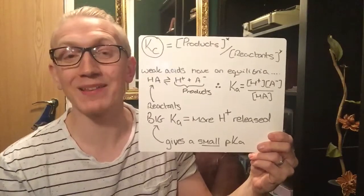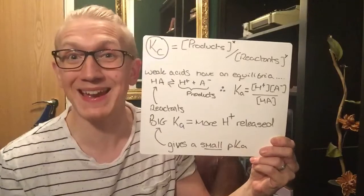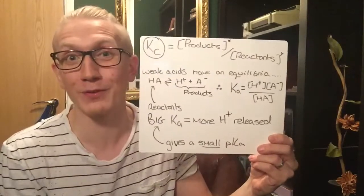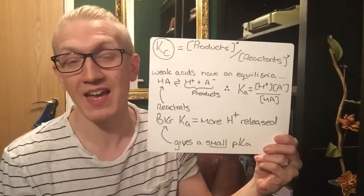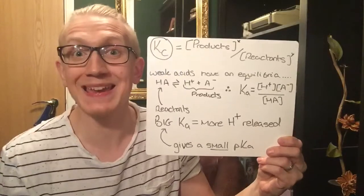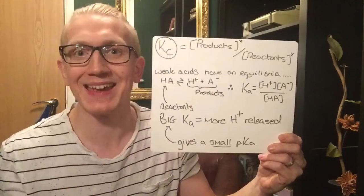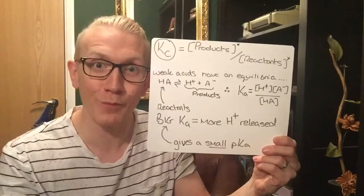What you've also got is a pKa scale associated with weak acids, which is a bit like the pH scale but you should never get confused between the two. The bigger a Ka, the smaller the pKa you're going to get for that weak acid. So remember it's the inverse. Just like pH, if you have a really big H+ ion concentration, then you're going to end up with a very small pH.